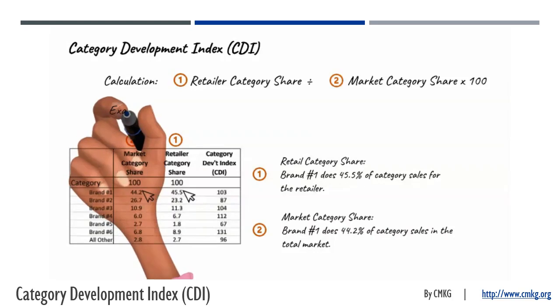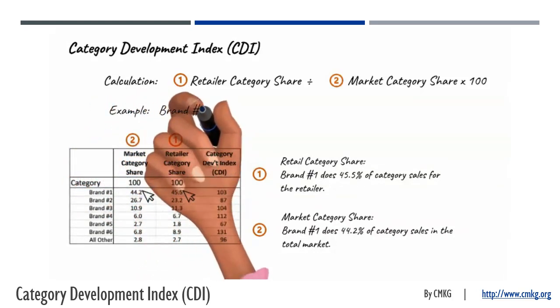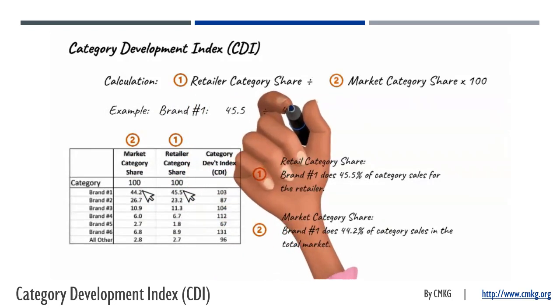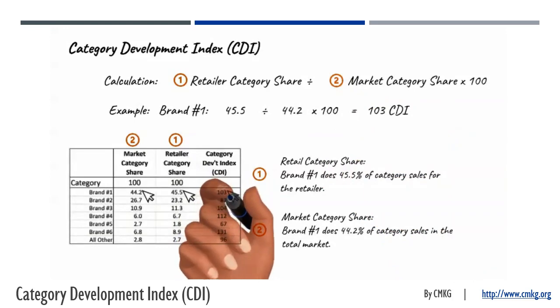So for brand number one, it's 45.5 retailer category share divided by 44.2 market category share, multiplied by 100, to equal a Category Development Index of 103.